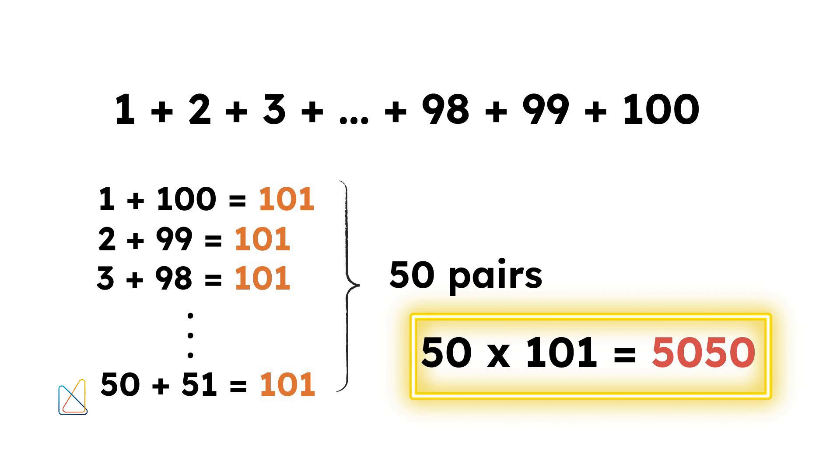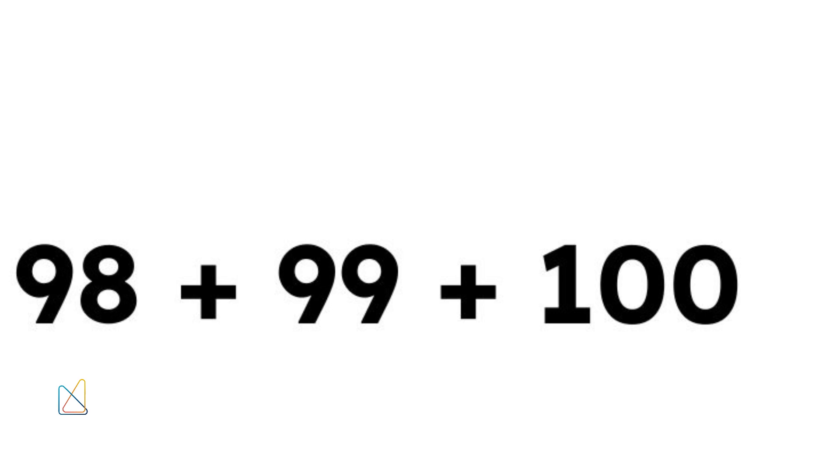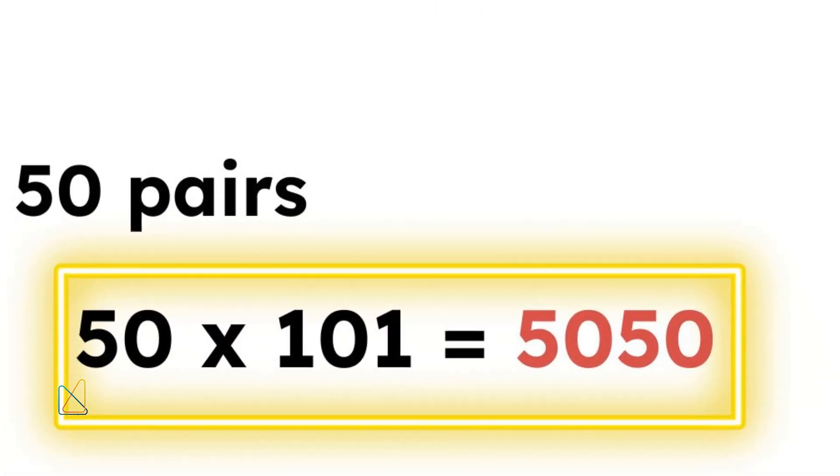50 times 101 equals 5,050. So, the sum of the numbers from 1 to 100 is 5,050.